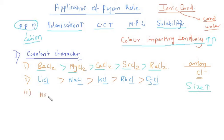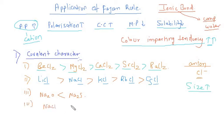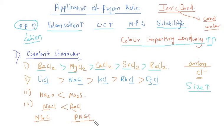We can also compare Na₂O and Na₂S. If you look at the size of oxygen versus sulfur, sulfur is bigger in size, so it will be polarized more easily by sodium — therefore Na₂S has more covalent character than Na₂O. Another example: NaCl vs AgCl. Sodium has a noble gas configuration, while silver has a pseudo noble gas configuration. Metals with a pseudo noble gas configuration have more polarization power, so AgCl has more covalent character.